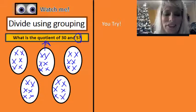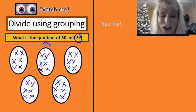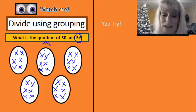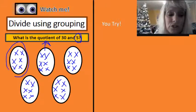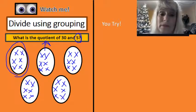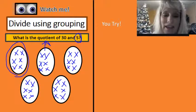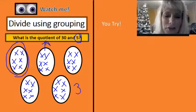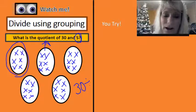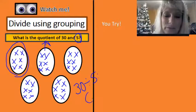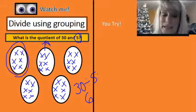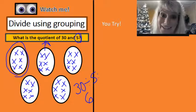29 and 30. Now I'm going to look inside one of these circles because they're going to be equal groups, and I can count six. That tells me that 30 divided by five is going to give me six, and my answer is six.